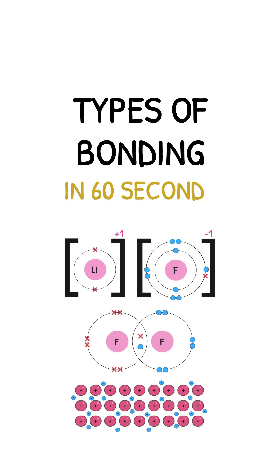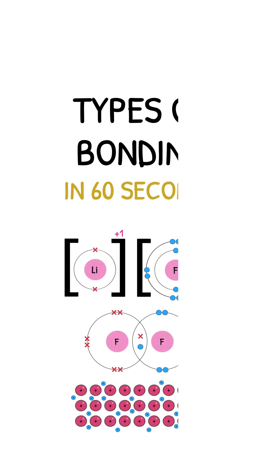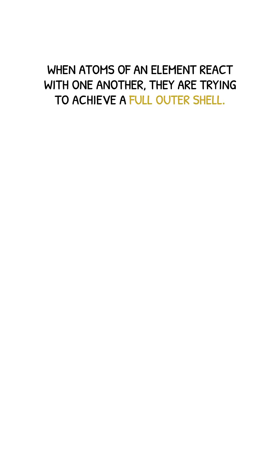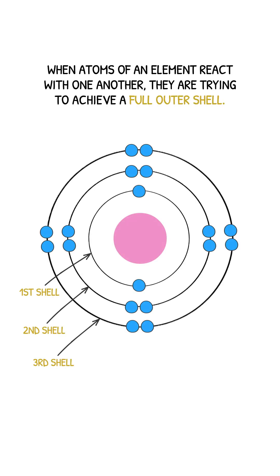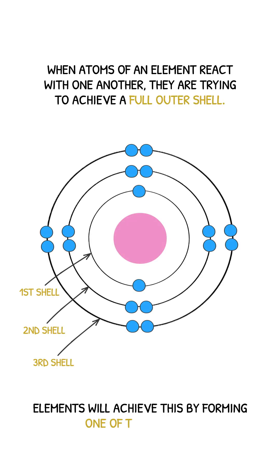Types of bonding in under 60 seconds. Let's go! When atoms of an element react, they are trying to achieve a full outer shell. Elements will achieve this by forming one of three bonds.